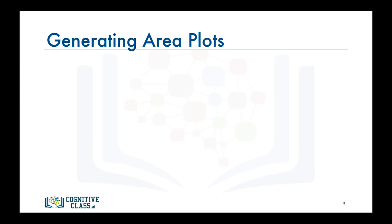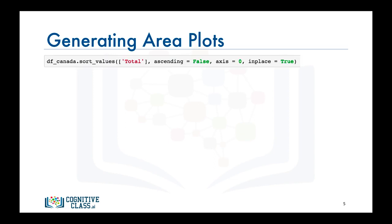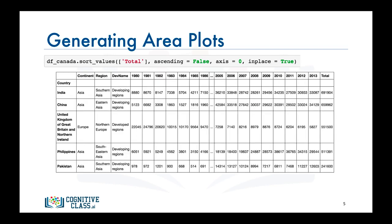Now that we know how our data is stored in the data frame df_canada, let's try to generate area plots for the countries with the highest number of immigration to Canada. We can find these countries by sorting our data frame in descending order of cumulative total immigration from 1980 to 2013, using the sort_values function. It turns out that India, followed by China, then the UK, Philippines, and Pakistan are the top five countries with the highest number of immigration to Canada.